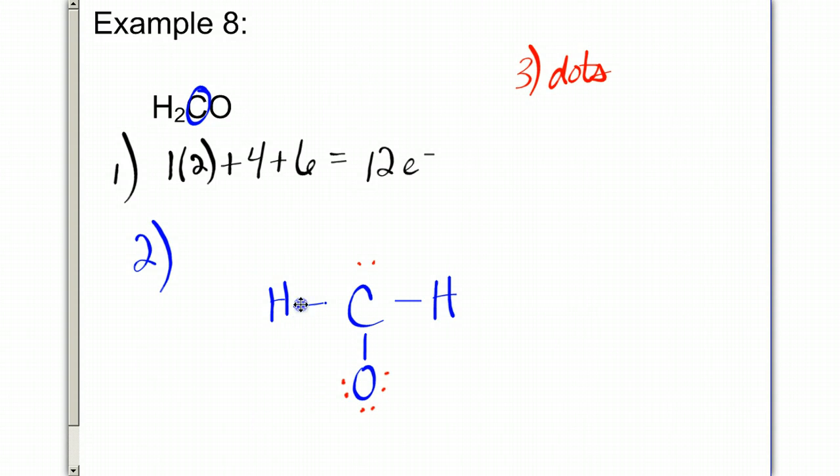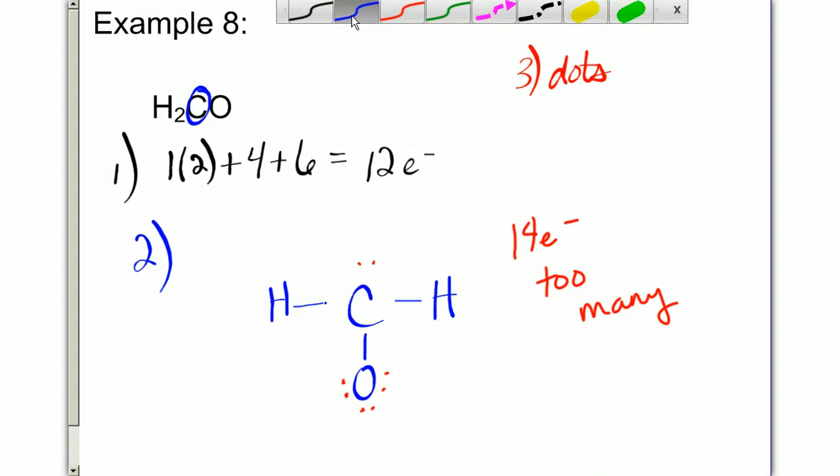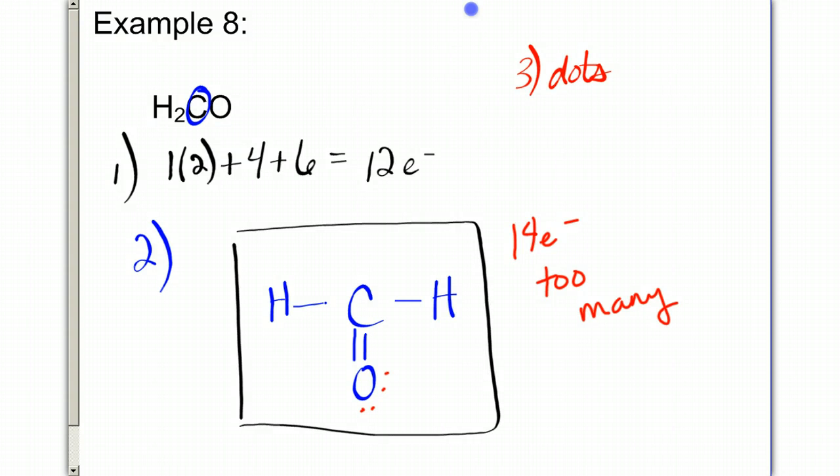Finally, I'll check my total. 2, 4, 6, 8, 10, 12, 14. Notice I have too many, and so what that means is I'll add a new bond from the carbon to the oxygen, and I'm going to lose a pair on both sides to complete my structure. I do not add a bond between carbon and hydrogen, because hydrogen is not in group 4, 5, or 6, and therefore cannot handle multiple bonds. So my final structure is a carbon double bonded to oxygen with the two hydrogens on either side of it.